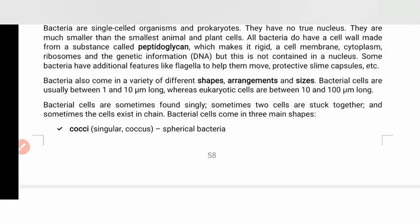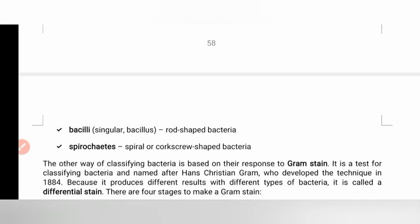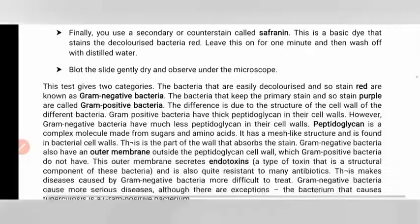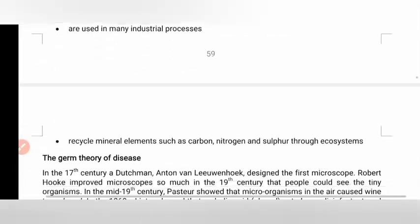Bacteria are classified by their arrangement and shape. The shapes include spherical and spiral forms. Bacteria are also classified using a staining method.